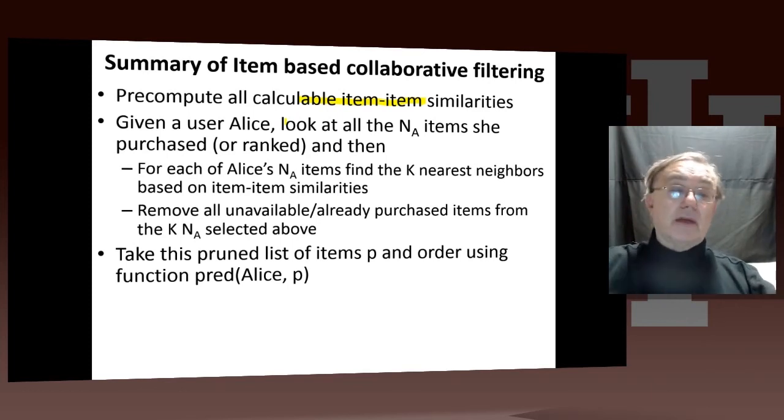You find the K nearest neighbors based on the item-item similarities of each of Alice's items. So you actually have K neighbors times N_a items from this. You remove from that K times N_a items duplicates, ones not actually available, already purchased by Alice, already sold. Then you take this pruned list of items and order it using that prediction function we had on the previous slide. That's what you return. That's what Amazon gives you when you search by relevance. That's not just Amazon. When you search by relevance, you get something searched by this predicted ranking function.